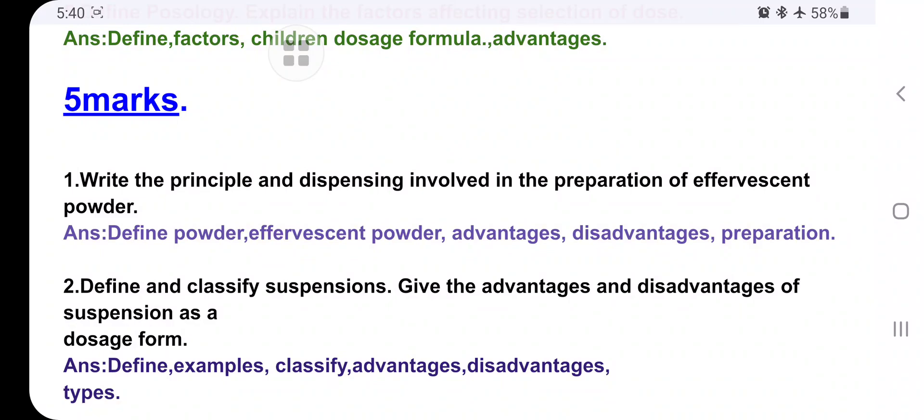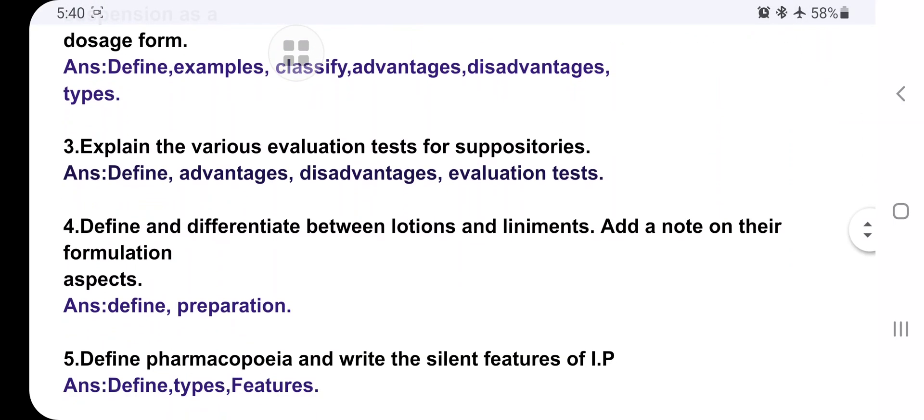Write the principle and dispensing involved in the preparation of effervescent powder: Define powder, effervescent powder, advantages, disadvantages, and preparation. Then define and classify suspension: Define, give examples, write classification, advantages, and types of suspensions - two types are flocculated and deflocculated. Sometimes they will ask separately: Write the flocculated and deflocculated suspension. That way also you have to write. Same: Write suspension definition, explain flocculated and deflocculated, simple.